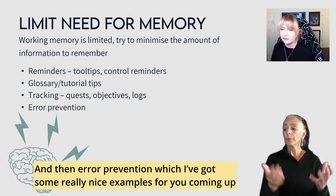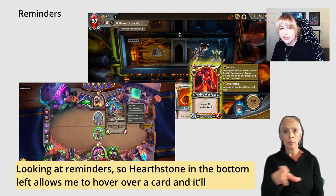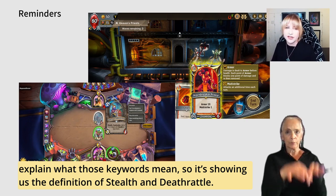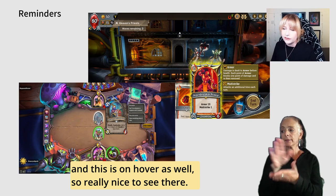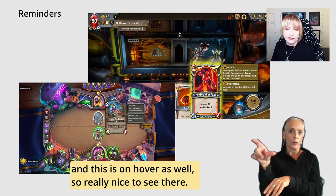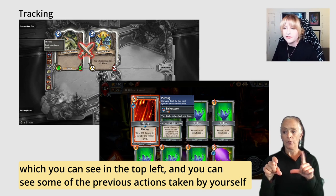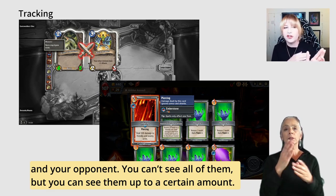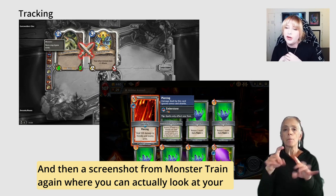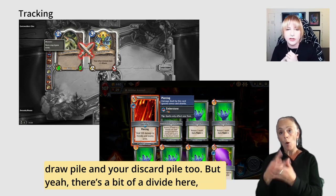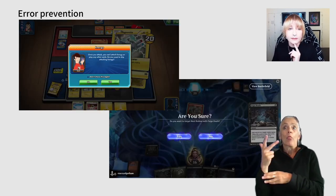For reminder examples: Hearthstone lets you hover over a card and it explains keywords — showing the definitions of stealth and death rattle. Monster Train has nice icons next to keywords on hover as well. For tracking, Hearthstone has a sidebar on the board showing previous actions by yourself and your opponent. Monster Train lets you look at your draw pile and discard pile. Some games don't have tracking built in, and players end up using third-party tools.